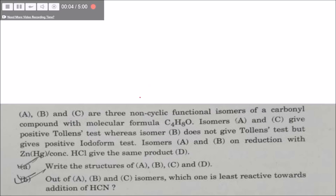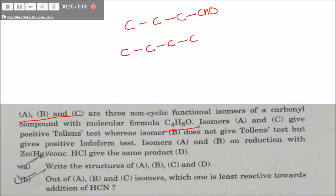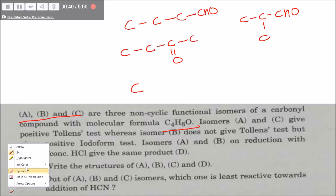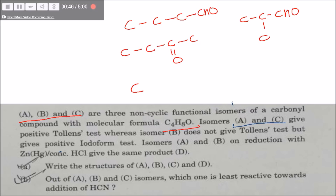A, B, and C are non-cyclic isomers of a carbonyl compound with 4 carbons. The possible structures are: two aldehydes and one ketone. A and B give a positive Tollens test, meaning A and B are aldehydes.